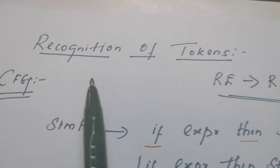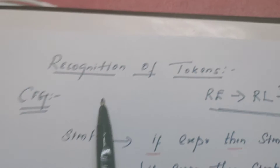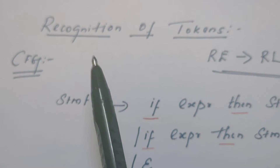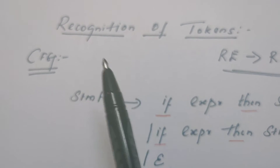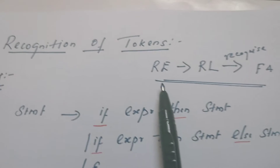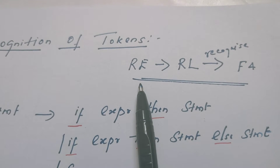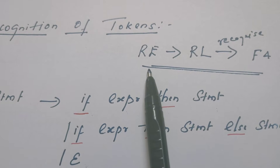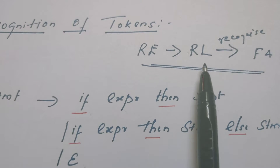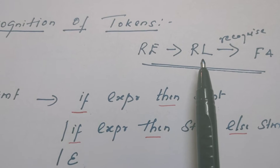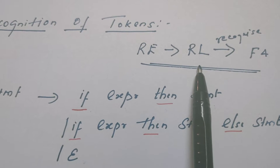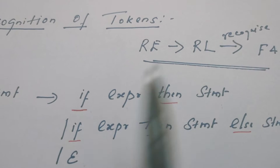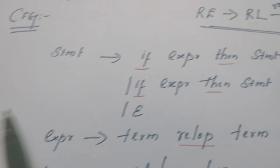Today we are going to discuss how to recognize tokens. Till now we have discussed how to specify the pattern of tokens using regular expressions. Regular expression is equivalent to regular language, and we know that regular language can be recognized by finite automata.